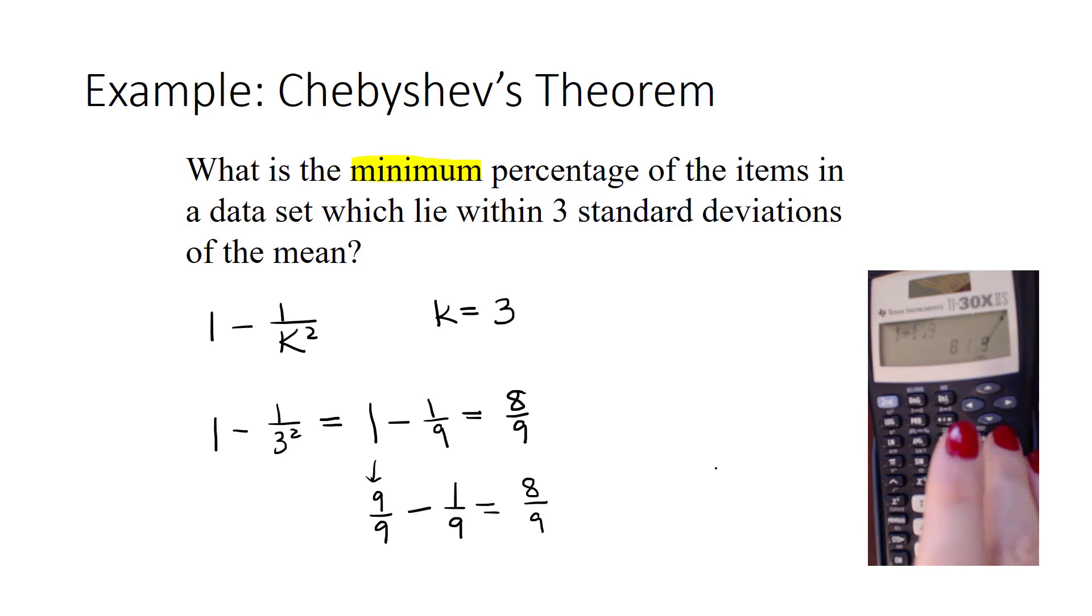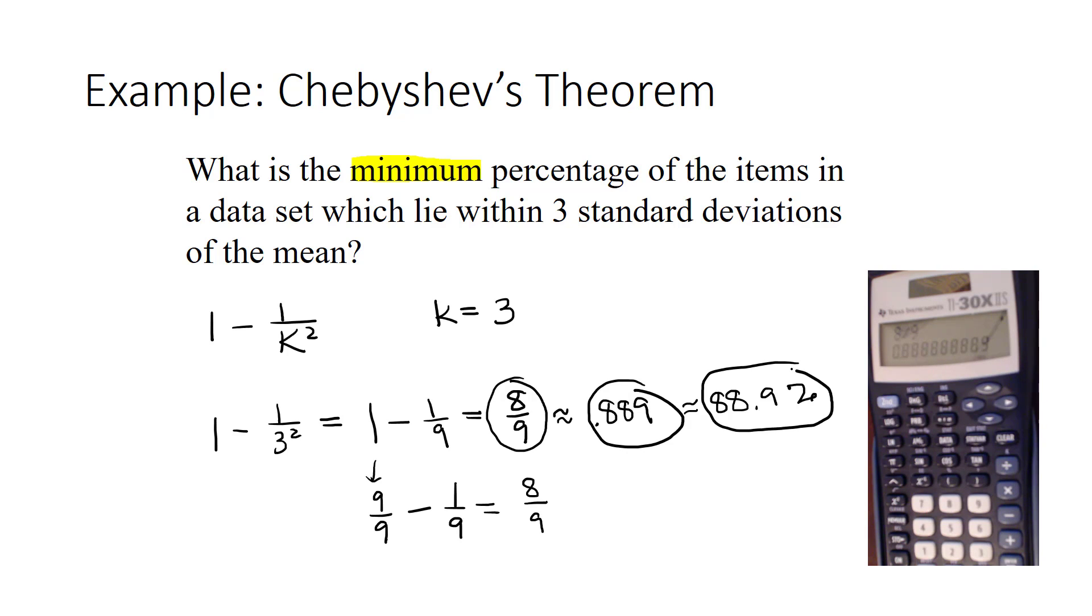Now, if you wanted to know what decimal that is, you would take 8 and divide it by 9, and that would give you .88888. So let's say that we wanted this answer to three decimal places, you would have to round off to .889. Or, perhaps someone's asking you to give a percentage. That's about 88.9% of the data moving the decimal place two places to the right. So we have three possible ways you might be asked to give your answer to this question: a fraction, a decimal, or a percentage.